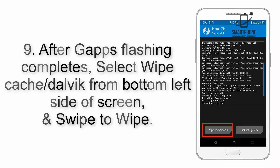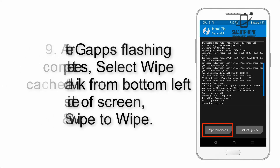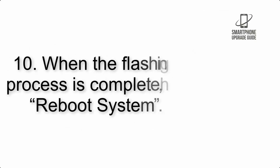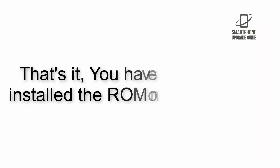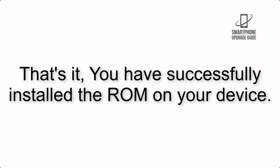Step 8: Flash the GApps zip package in the same manner. Step 9: After GApps flashing completes, select Wipe Cache and Dalvik from the bottom left side of the screen and swipe to wipe. Step 10: When the flashing process is complete, hit Reboot System. That's it — you have successfully installed the ROM on your device.